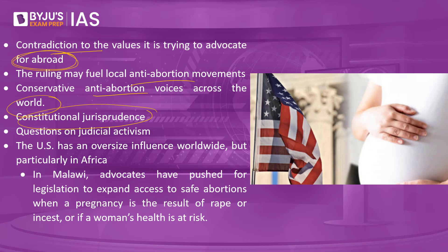Many countries reference US legal concepts — for example, India's Bill of Rights and the Maneka Gandhi case drew on the due process principle imported from the US. With this particular judgment, the constitutional jurisprudence around pro-choice women's rights is being violated. This also questions judicial activism as well — the judiciary is the last ray of hope for women with issues, but now even judicial activism may not be able to restore this faith, and women worldwide may suffer.